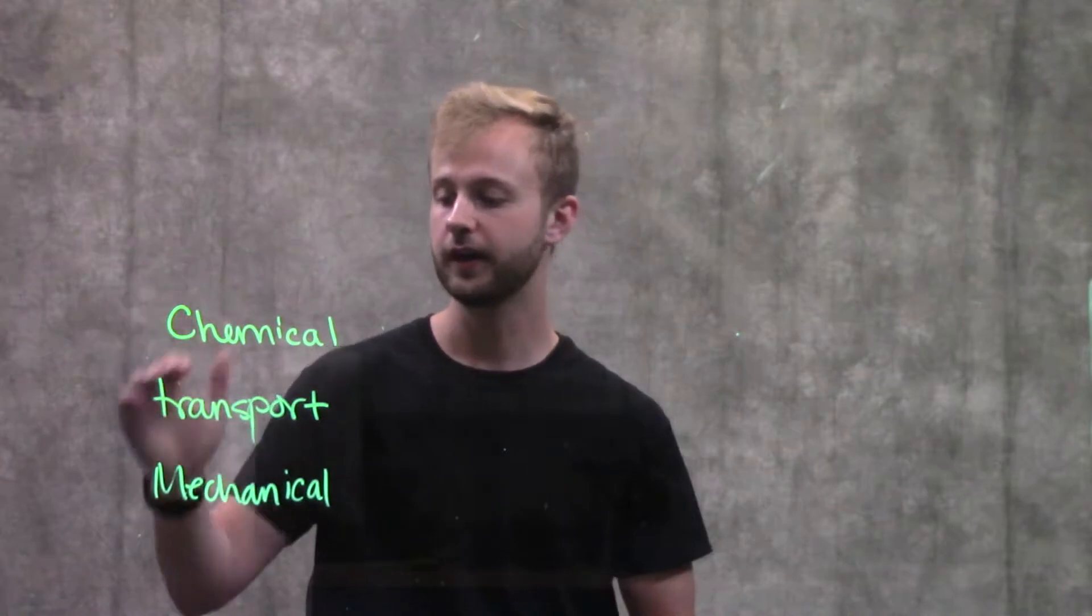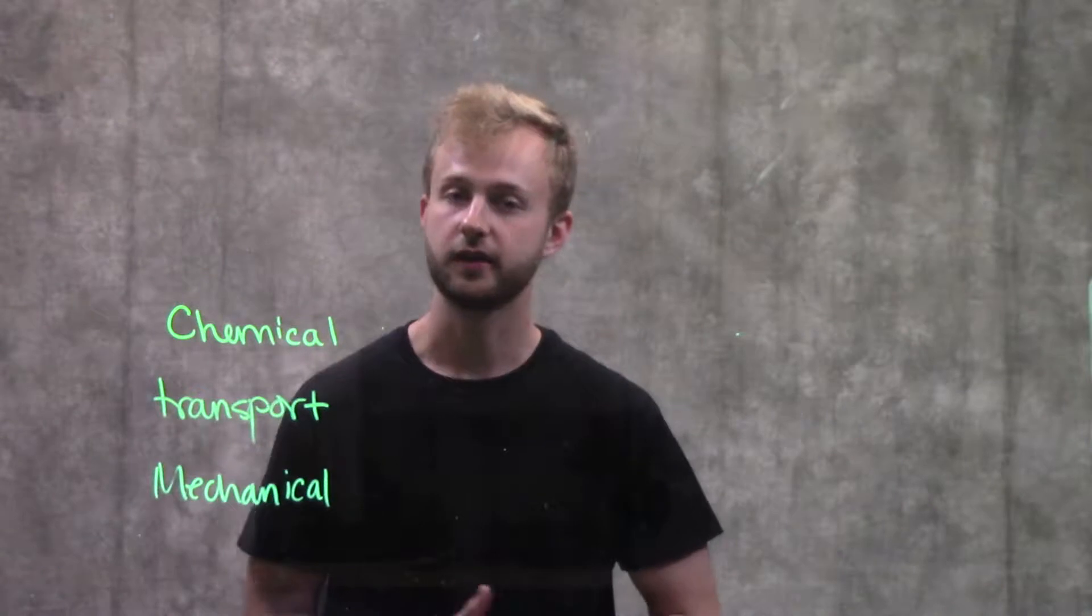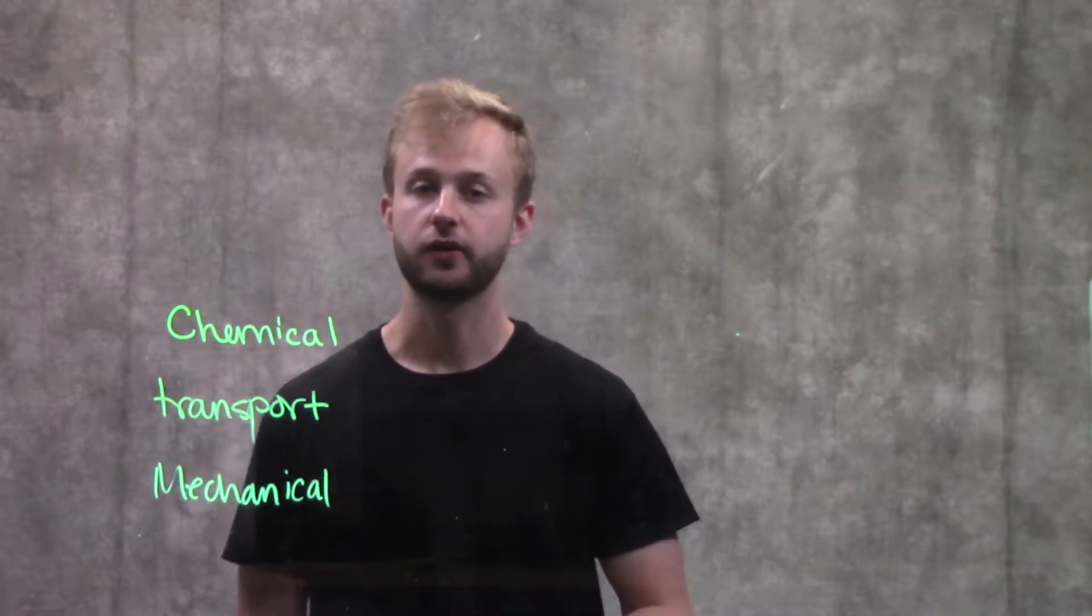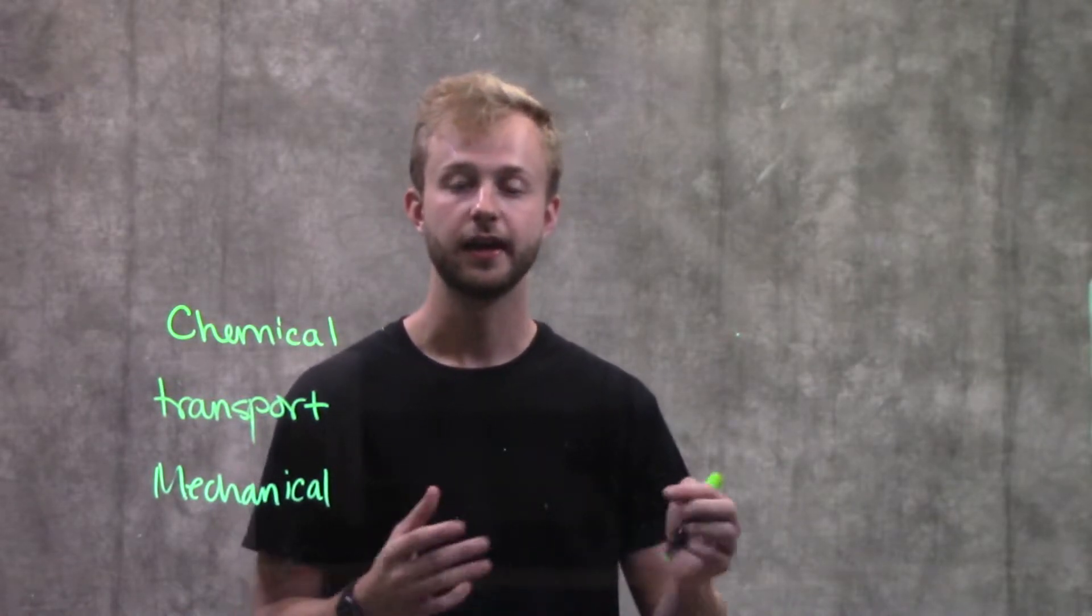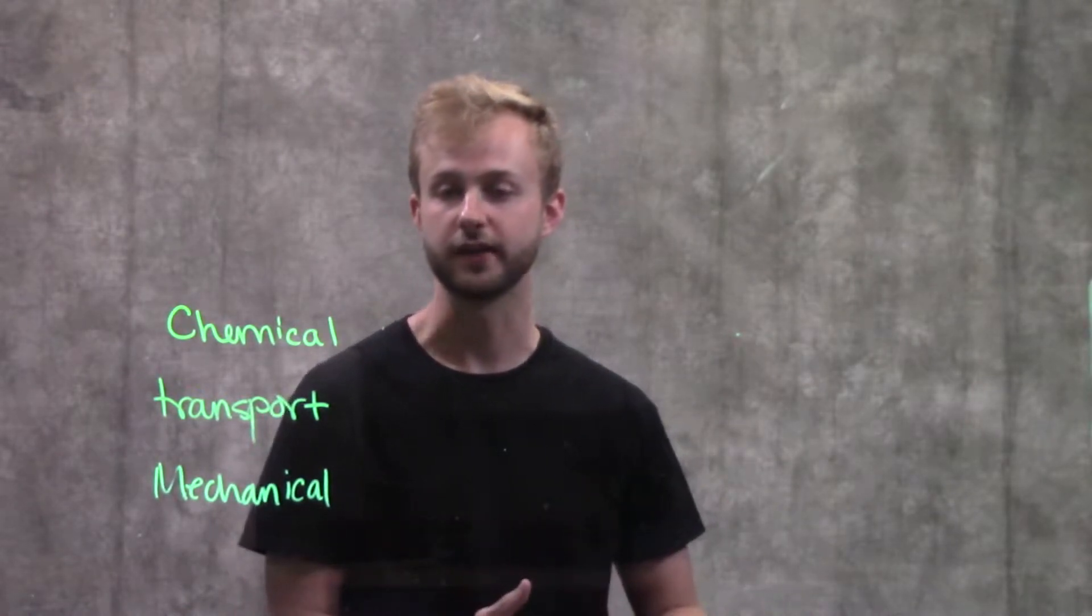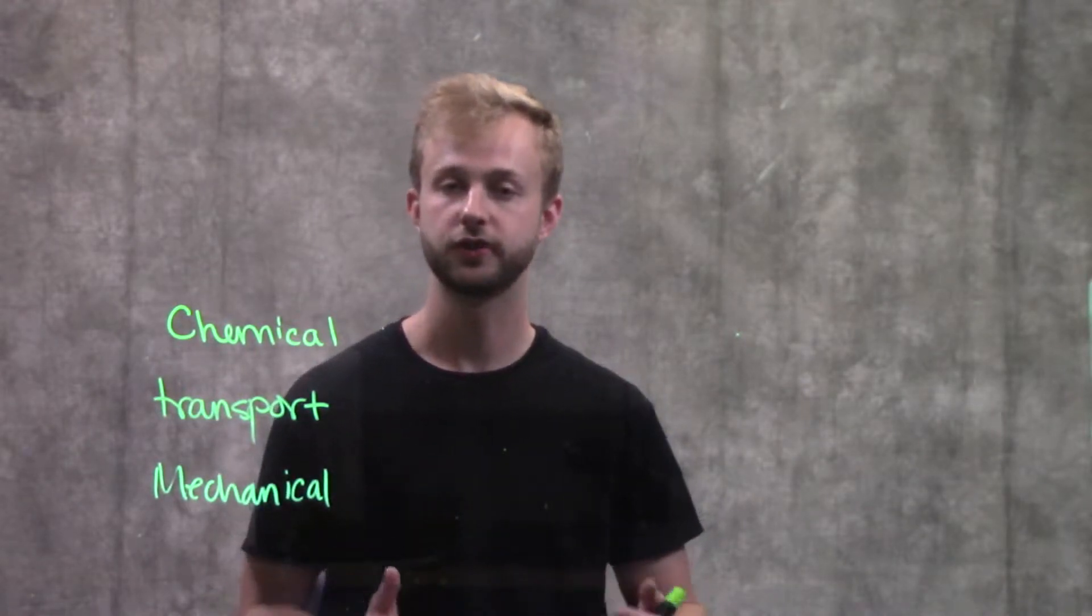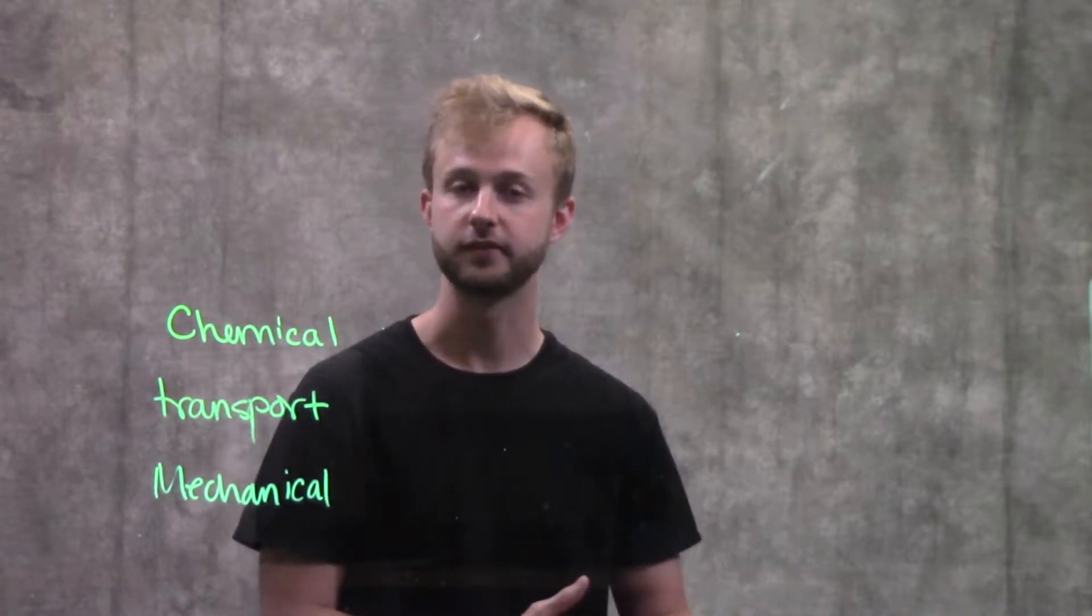There are three kinds of work that ATP is typically used to carry out. The first of those kinds is chemical work. We know that we have exergonic and endergonic reactions, and endergonic reactions require energy in order to take place. Where we get that energy from is from ATP. Our cells will use ATP to power these endergonic reactions and get them to take place.